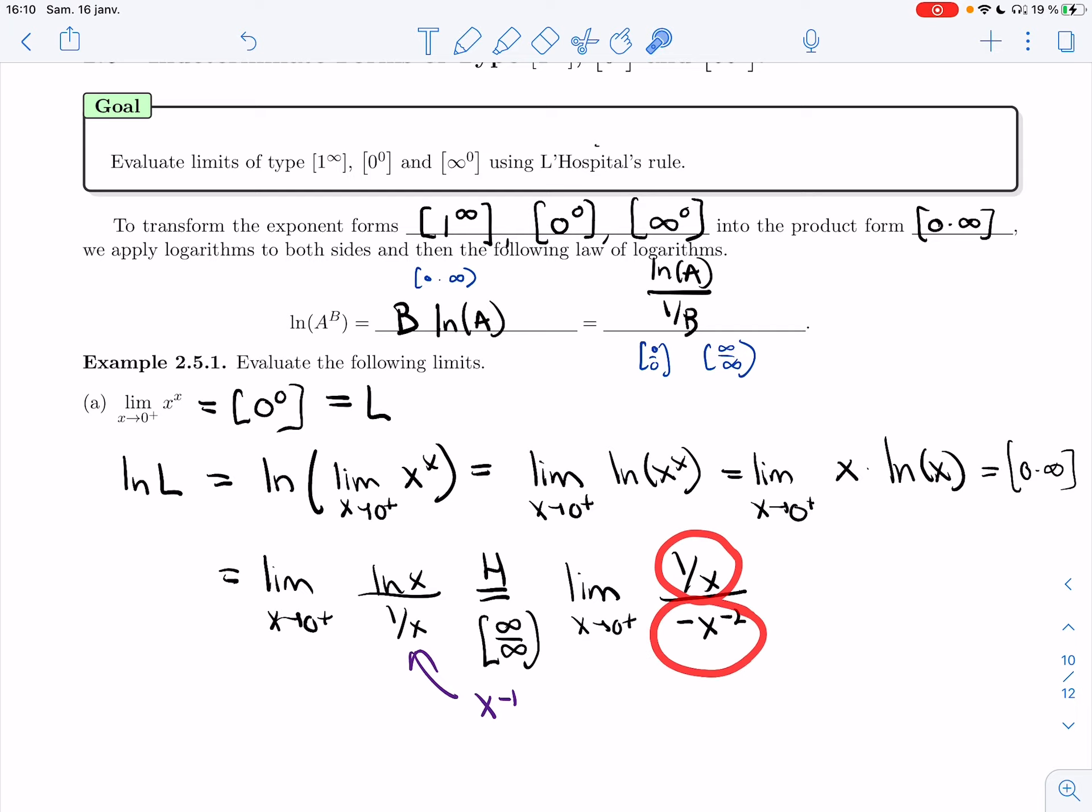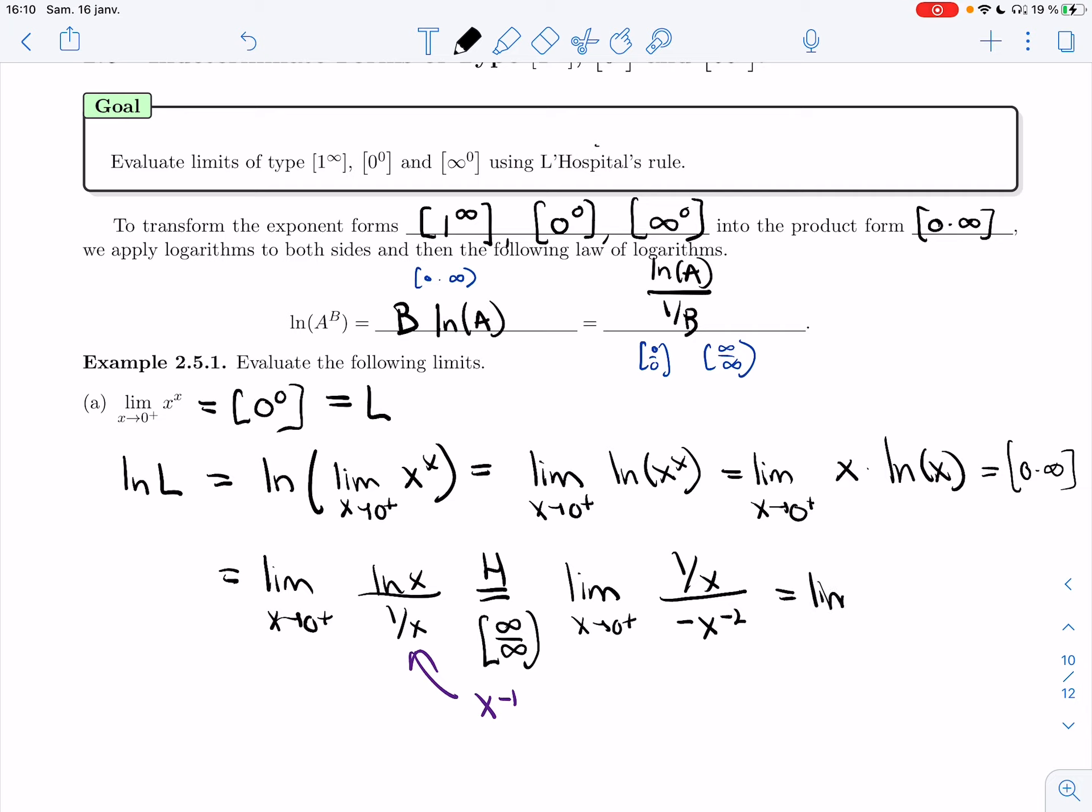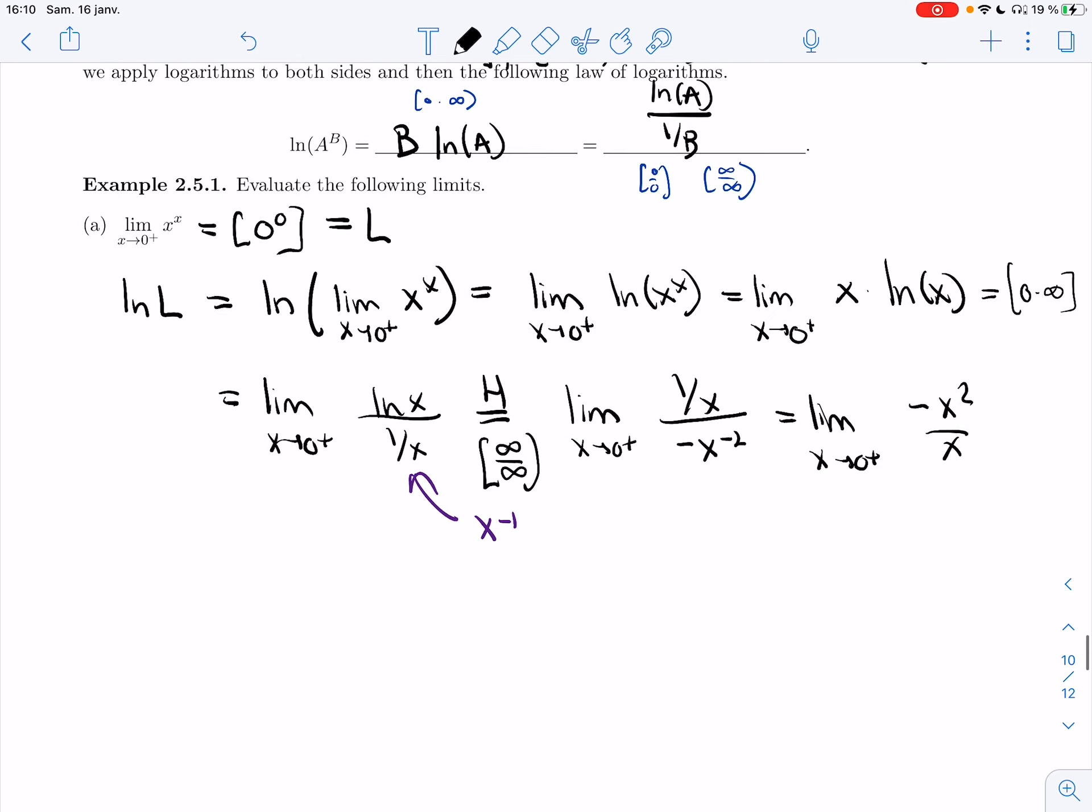All right, so I have powers of x above and below. I'm going to simplify it a bit. I'm going to get minus x squared over x. I'm going to cancel part of it. I'm going to get minus x. And so that's going to be 0.